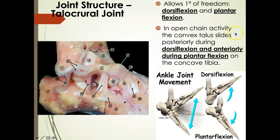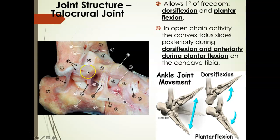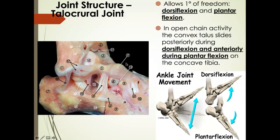If we want dorsiflexion to occur — bringing the toes up toward the tibia — that talus has to glide posteriorly at the talocrural joint. If we want plantar flexion to occur, then that talus is going to glide anteriorly to allow plantar flexion. These motions are specific to the talocrural joint. To recap: at the tibial-fibular joint, the fibula glides superiorly and rotates laterally for dorsiflexion. At the talocrural joint, dorsiflexion also requires a posterior glide of the talus — an arthrokinematic motion producing the osteokinematic motion of dorsiflexion.